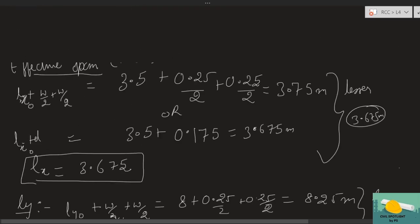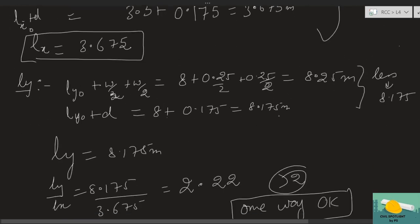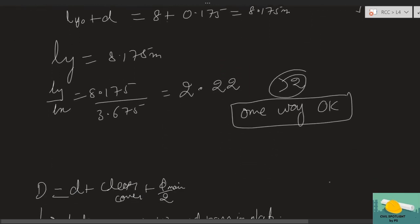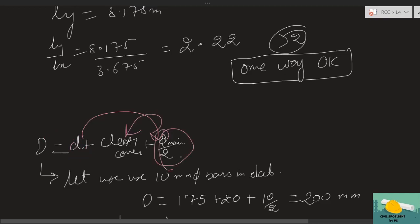An important tip: if you encounter questions where you can't find effective span, just use the clear span ratio. If effective depth is given, you can compute effective span; otherwise you're forced to use the clear span ratio as I've shown. This is a complete objective question right here. I've even seen such questions in PSU papers — where they give a specific d value and wall width and ask whether it's one-way or two-way.